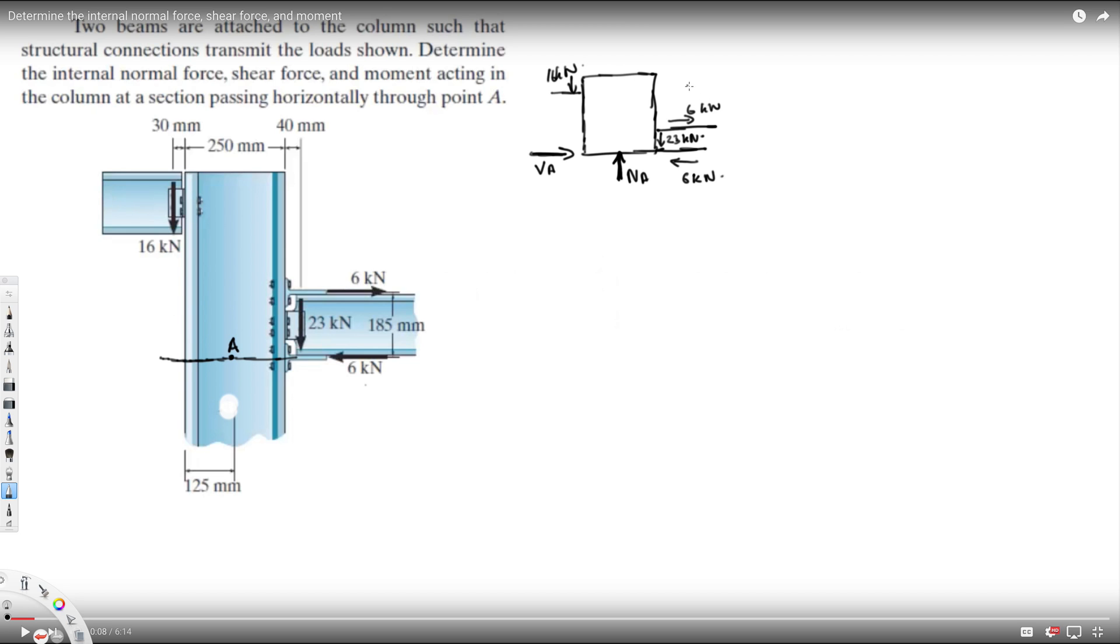Let's do summation of Fx, Fy and see what we can find. If I do summation of Fx equal to zero, I will get Va positive plus 6 kilonewton minus 6 equal to zero. Six and six cancel each other, therefore Va is equal to zero. So this is the shear force.